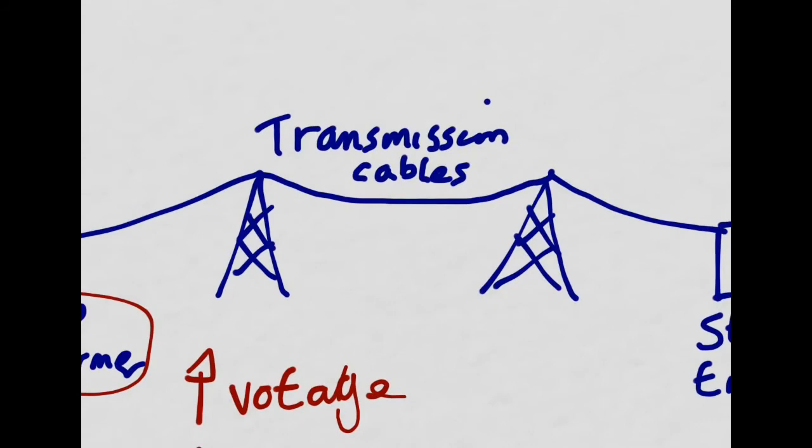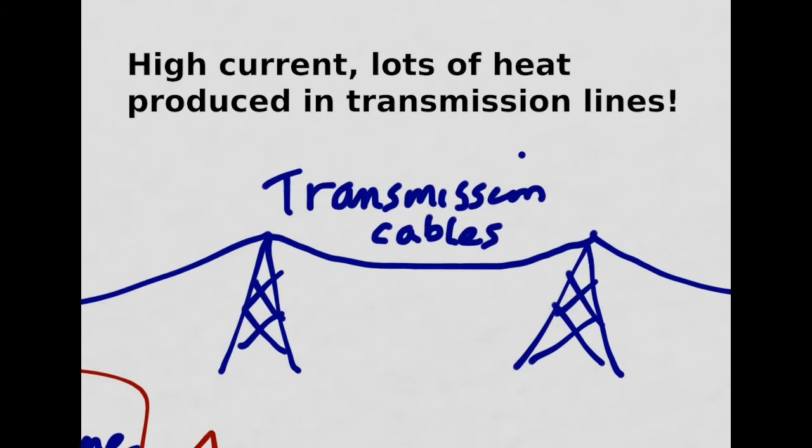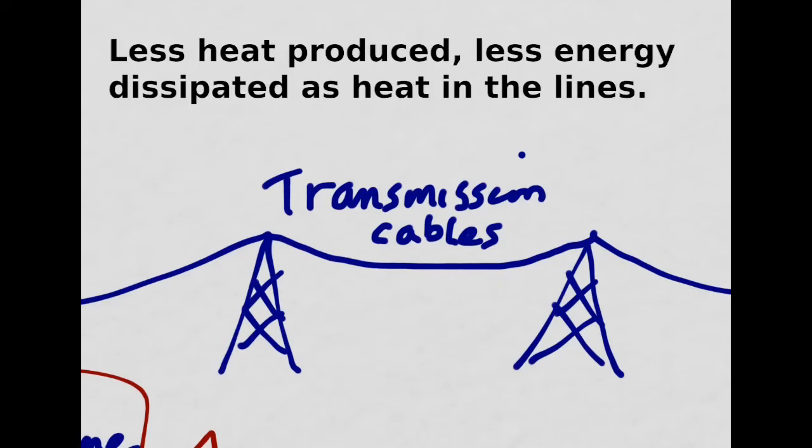the issue with high current is high current means lots and lots of heat. Lots and lots of heat being produced, lots and lots of wasted thermal energy being produced is not going to make for efficient transmission. So we need to reduce the current in order to reduce our energy losses along these transmission lines.